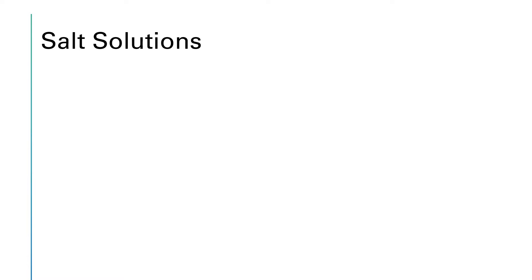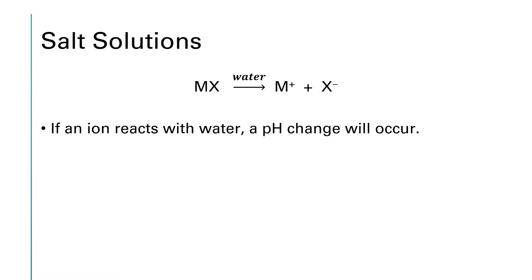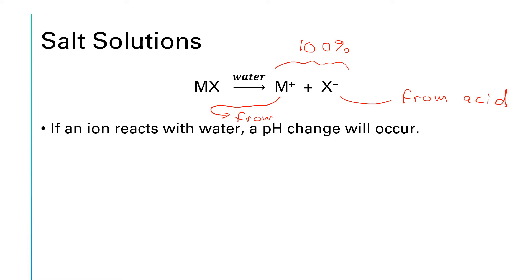I took this next slide from the presentation already recorded and on canvas. If we take a salt where MX represents the salt, M is the cation and X is the anion, when this salt undergoes a one-way reaction so that it's 100% cations and anions, that cation and anion is completely surrounded by water and has the opportunity to react with water. Remember that the anion came from the acid and the cation came from the base in that acid-base neutralization reaction.